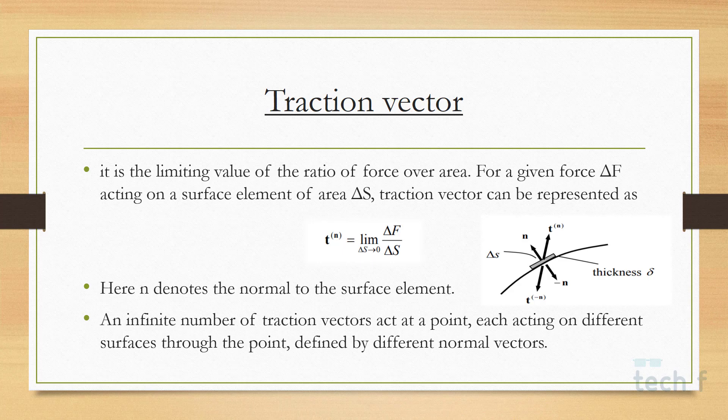Since the traction vector is acting at a particular point for a particular area passing through the point, we can say an infinite number of surfaces will pass through that point, therefore resulting in infinite number of traction vectors.